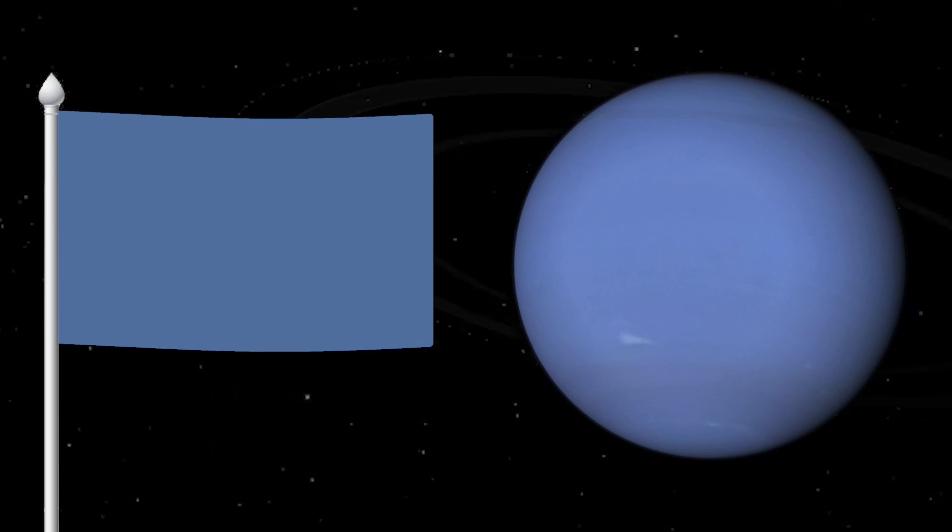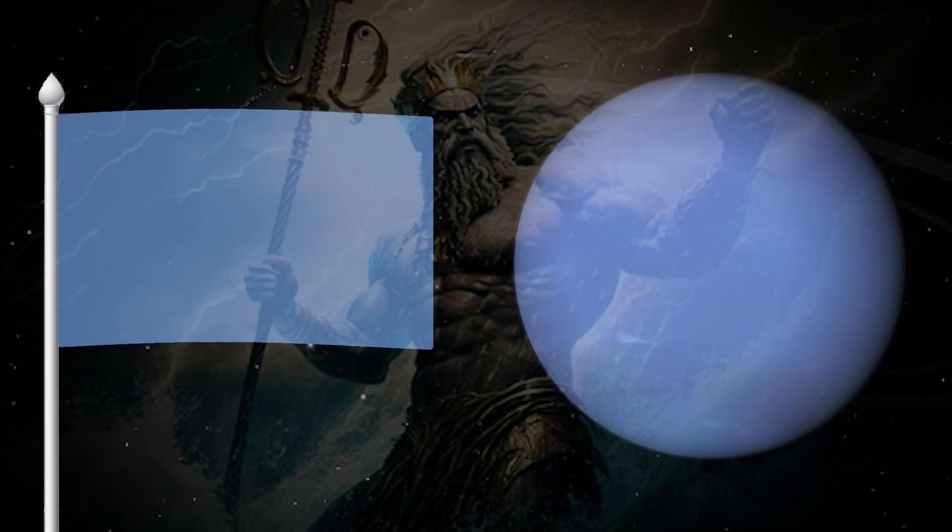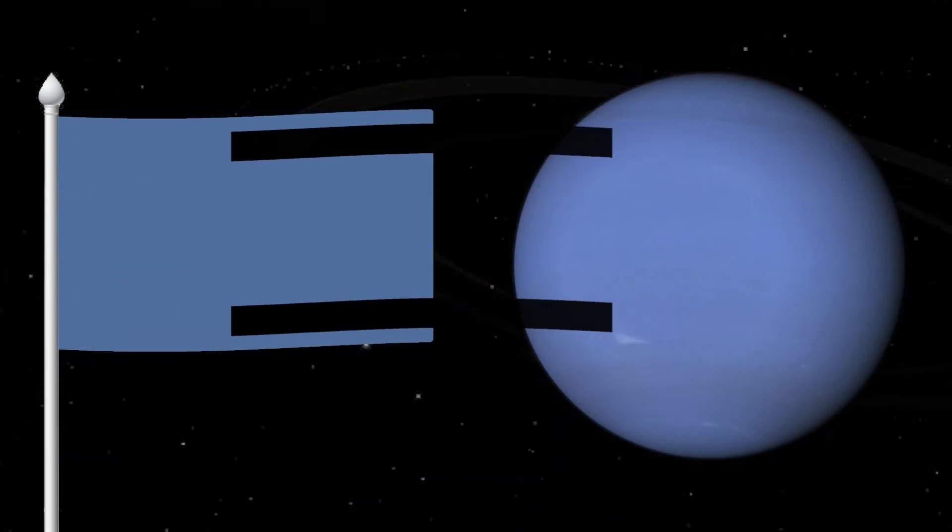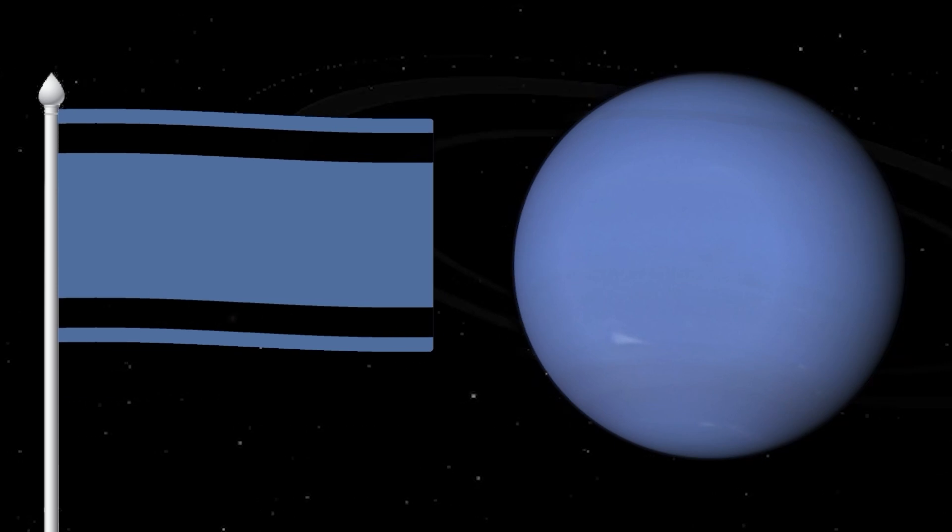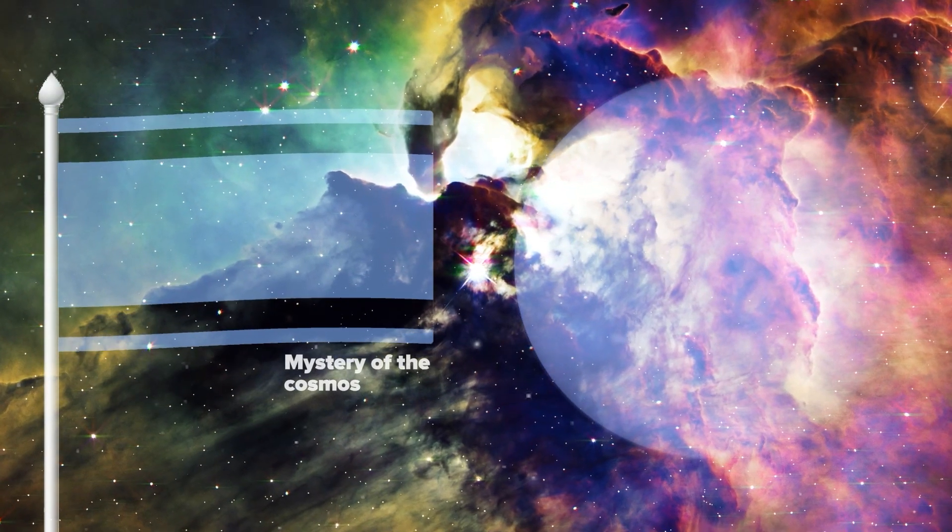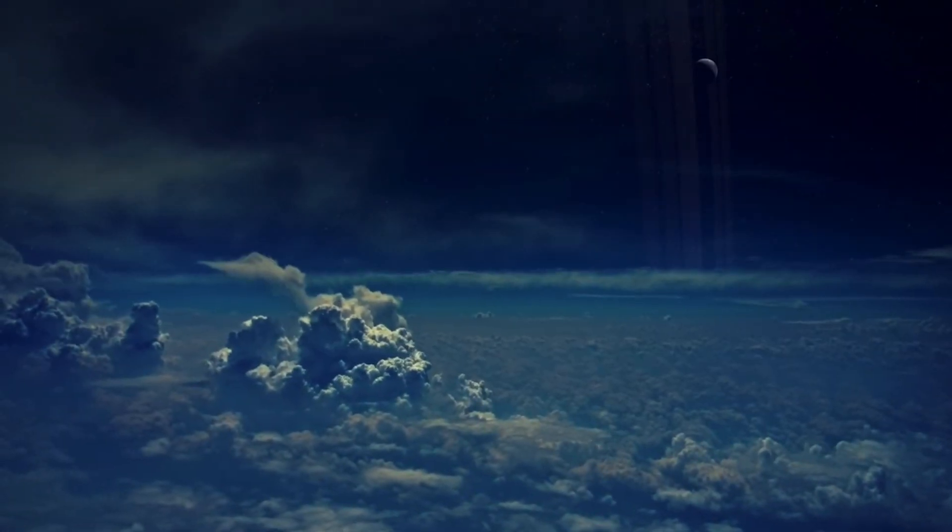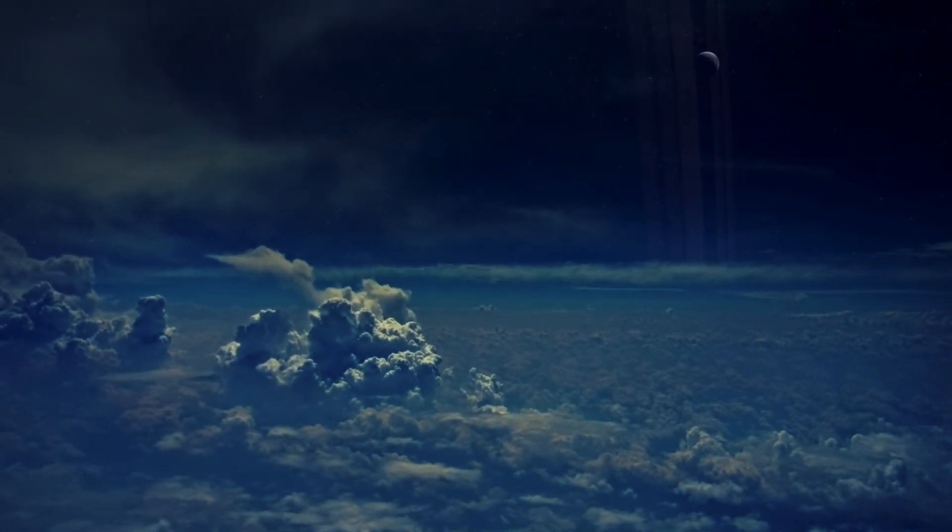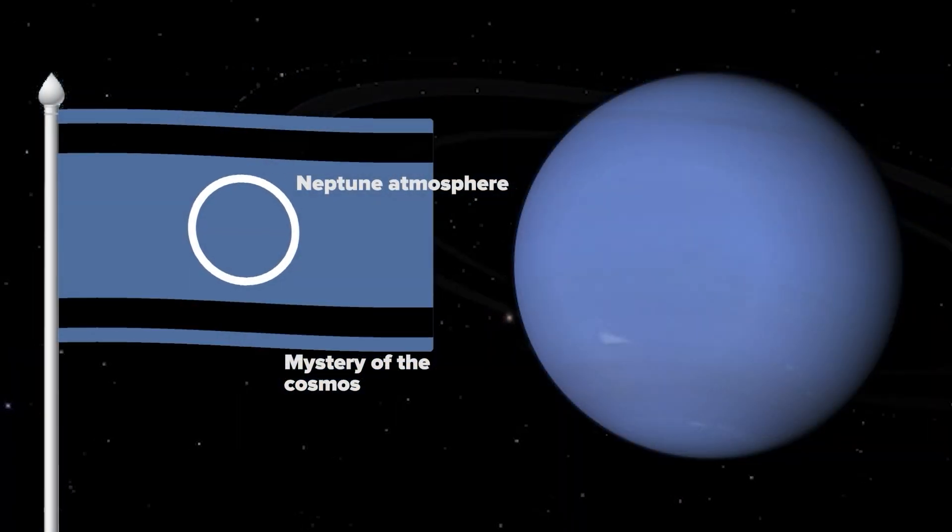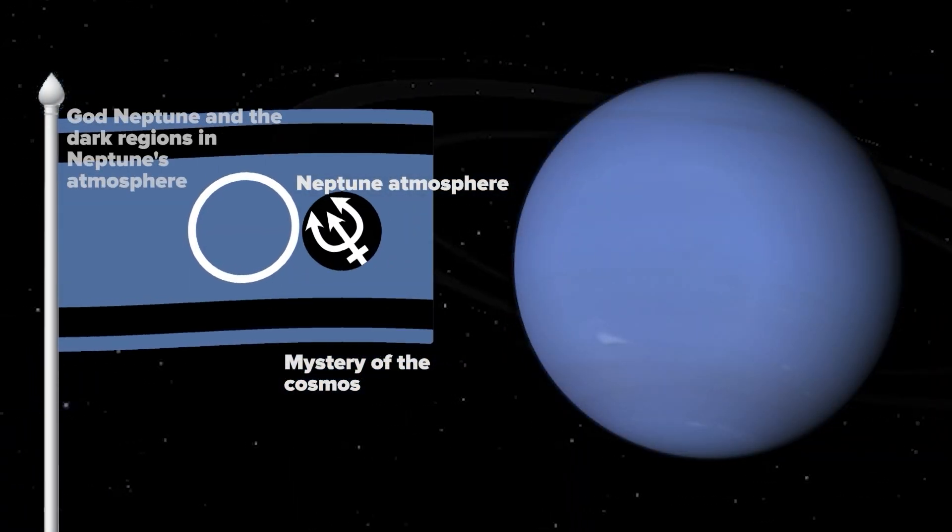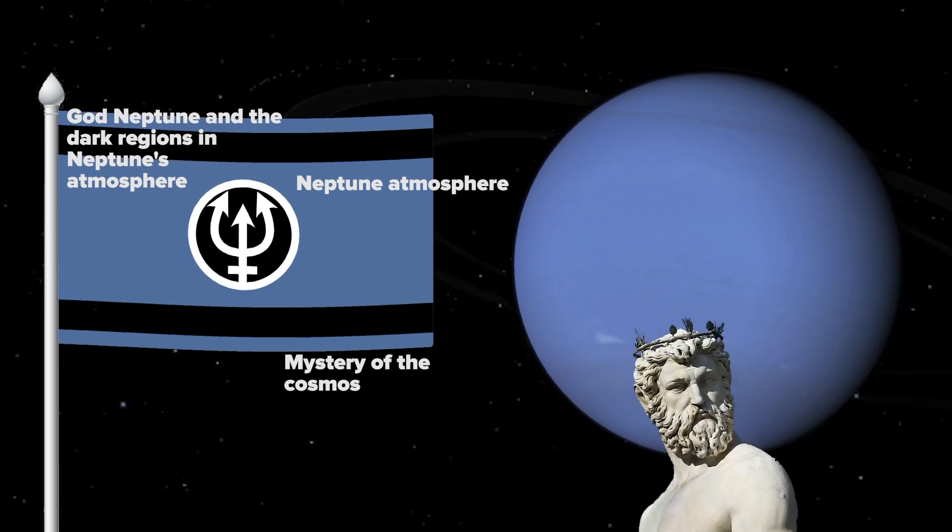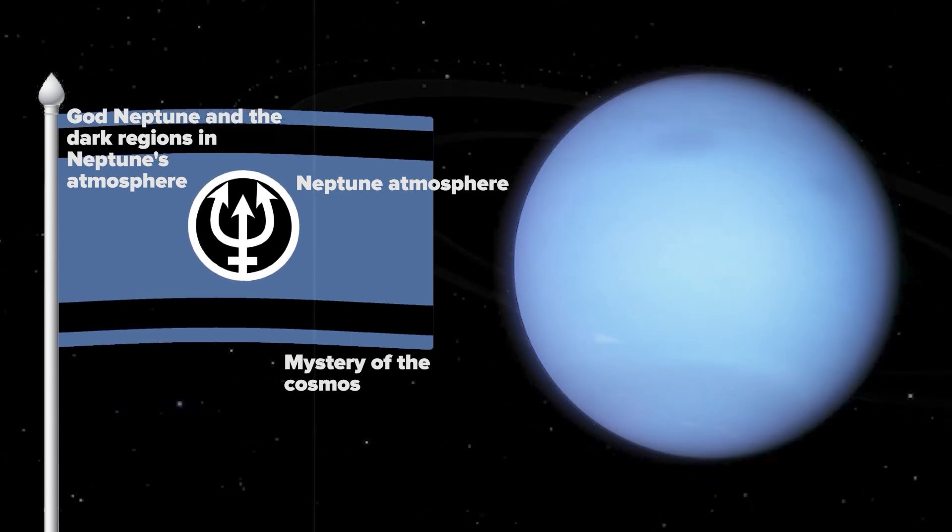The background will be blue, symbolizing the Roman god of the seas. There are two horizontal lines above and below in black, symbolizing the mystery of the cosmos. In the center is a white circle symbolizing the clouds in Neptune's atmosphere. Also depicted in the center of the flag is a white trident in a black circle, which also speaks of god Neptune and the dark regions in Neptune's atmosphere.